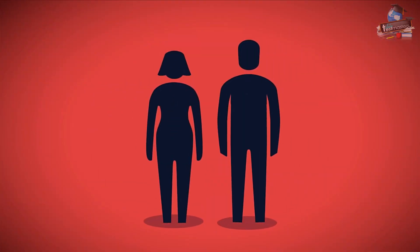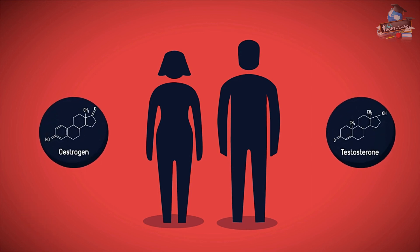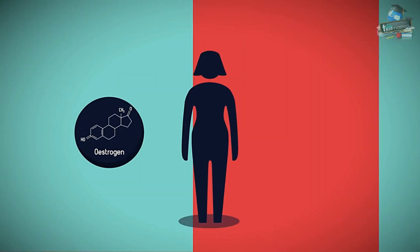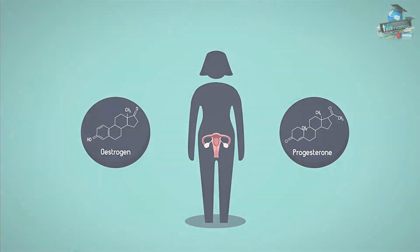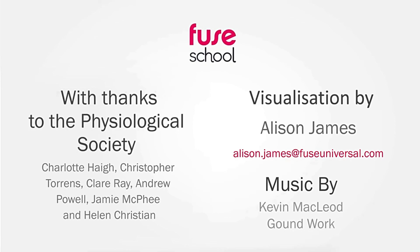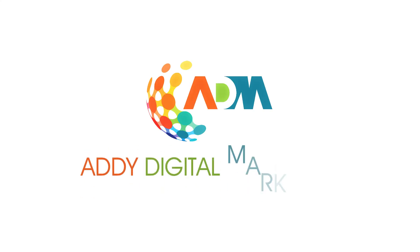In conclusion, the development of secondary sexual characteristics during puberty is stimulated by testosterone in males and oestrogen in females. Oestrogen and progesterone are important hormones in regulating the menstrual cycle in females. In females, the menstrual cycle is a bit of a...